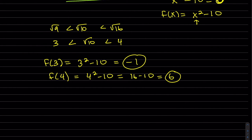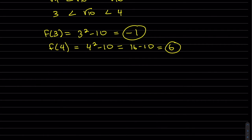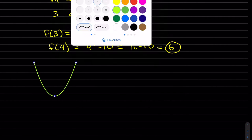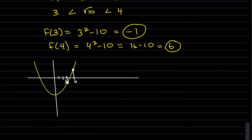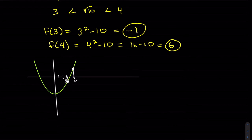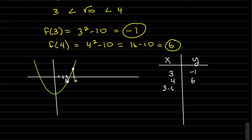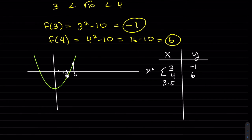By the Intermediate Value Theorem there's a root between 3 and 4. Now we're going to take the average of 3 and 4 and use a table to follow this more cleanly. We found f(3) = −1 and f(4) = 6, and since these are opposite signs, the average is 3.5. We take the average — half the sum of 4 and 3 — so now we plug in 3.5.